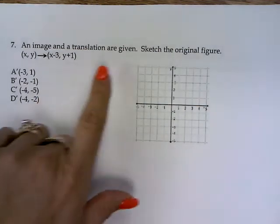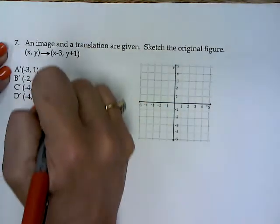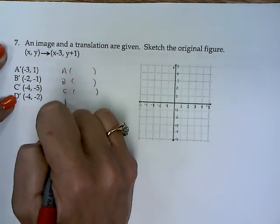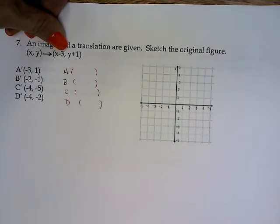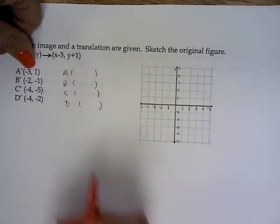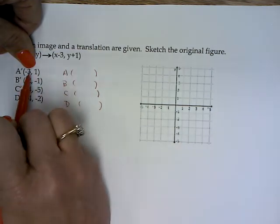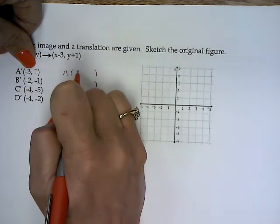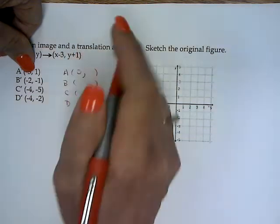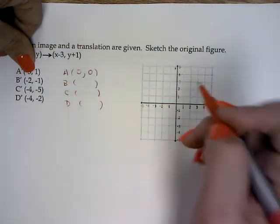An image and a translation are given. Sketch the original. Okay, we're working backwards. We want to know what A is. We want to know what B is, what C is, and what D is. Which means that, what did I put into here to get this? So it's basically working backwards. So, if I ended at negative 3, where did I start? 0 minus 3 gave me negative 3. If I ended at 1, what did I start with? 0 plus 1 gave me 1. So my A was at the origin.